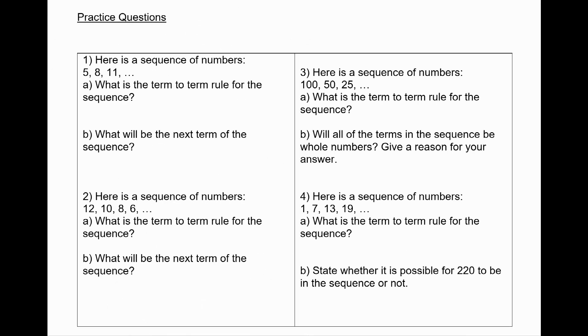Here are some practice questions for you to try. Please pause the video now and have a go. And when you're ready for the answers, press play. Here are the answers. In the first question, the term-to-term rule is add 3, or plus 3. The next term of the sequence, therefore, is going to be 11 plus 3, which is 14.